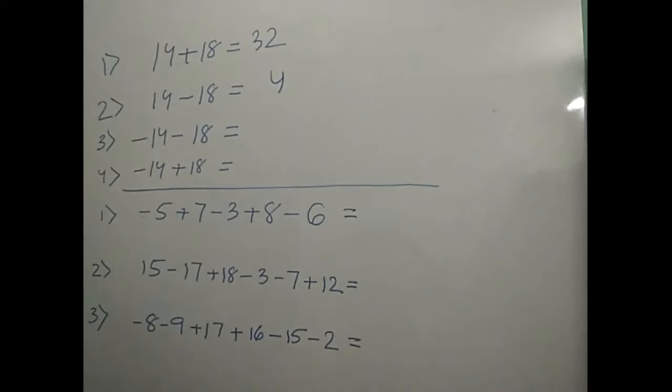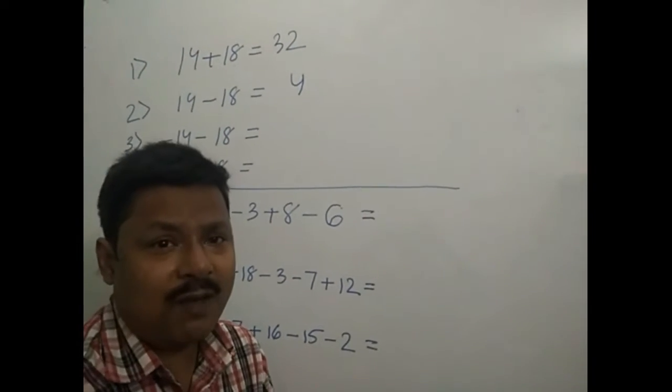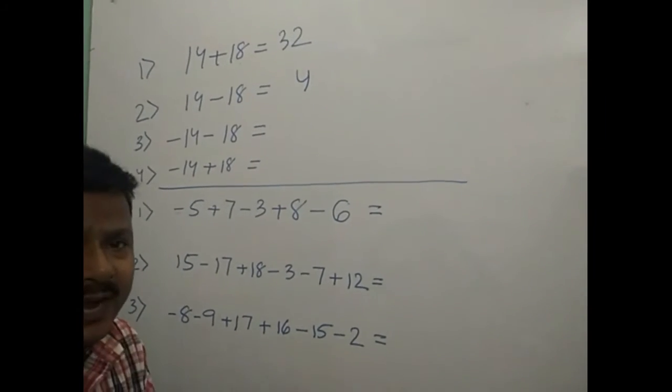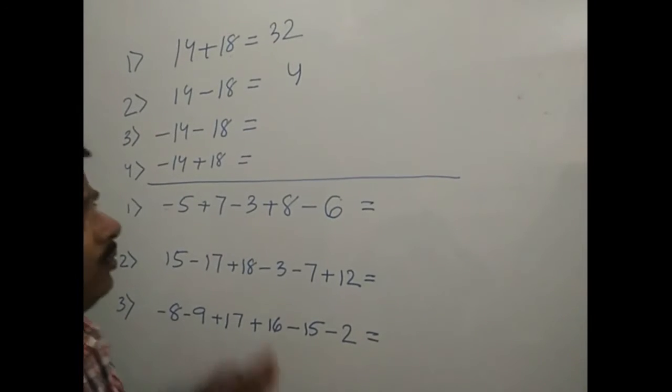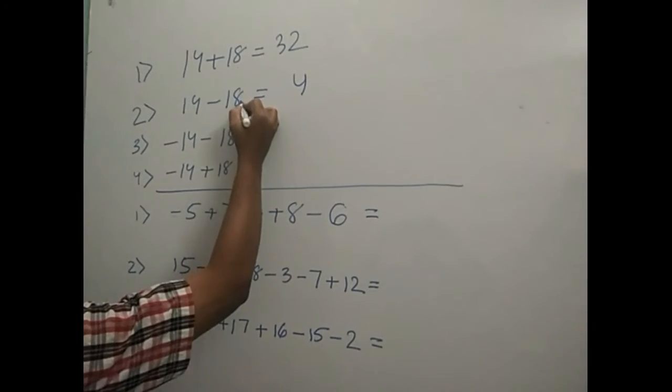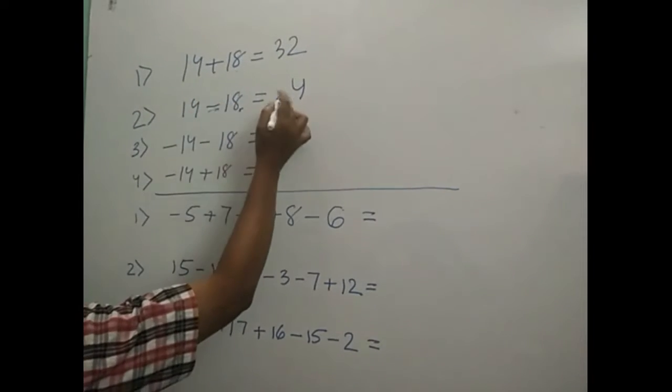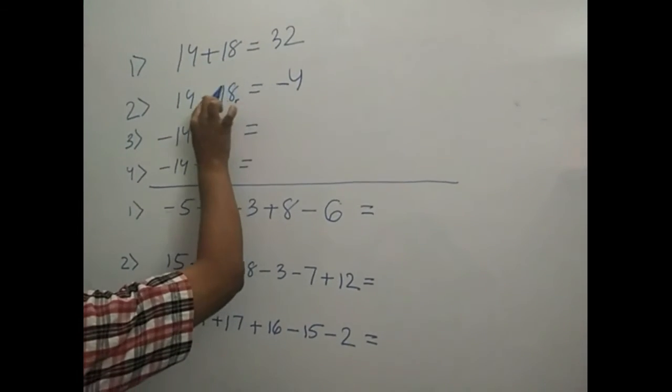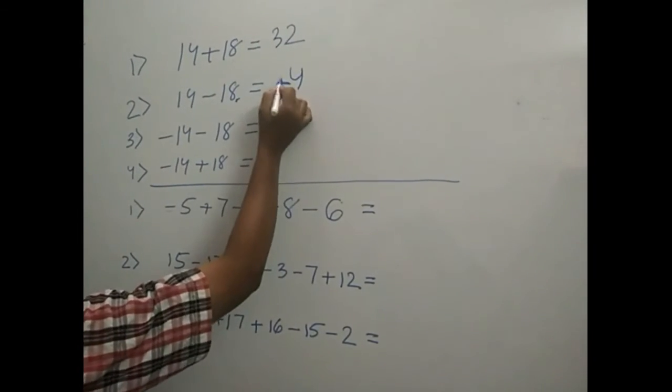Now, what will be the sign? What will be the sign of this number? Whichever number is bigger, its sign will be given to this number. 18 is bigger, 18 sign is minus. So this will be minus 4.